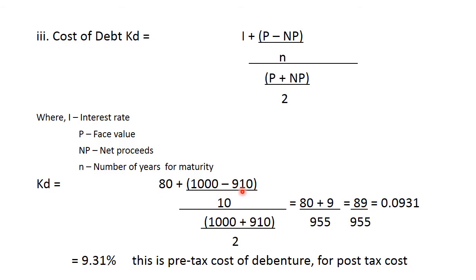950 rupees is the net proceed minus the underwriting commission. It becomes 910 rupees. 950 minus 40 is 910. That is used over here.